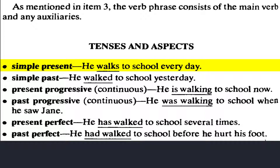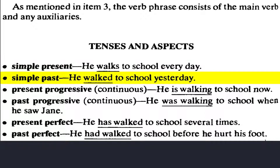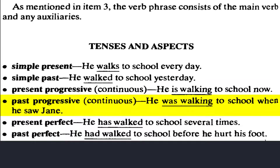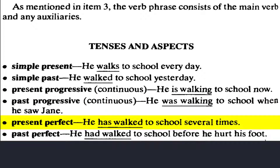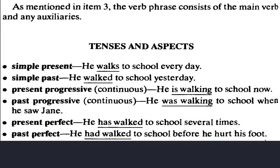Simple present: he works to school every day. Simple past: he worked to school every day. Present progressive or continuous: he is working to school now. Past progressive or continuous: he was working to school when he saw Zen. Present perfect: he has worked to school several times. Past perfect: he had worked to school before he hurt his foot.